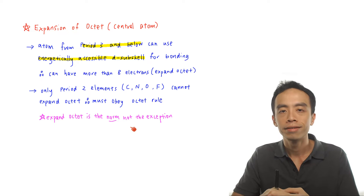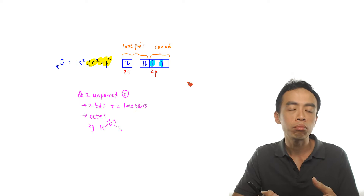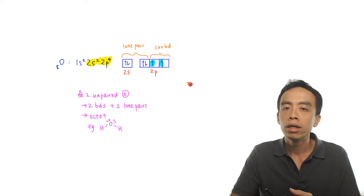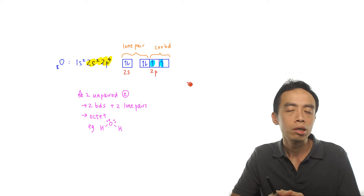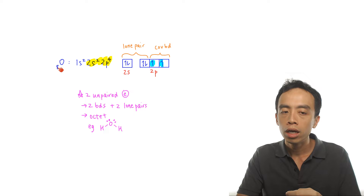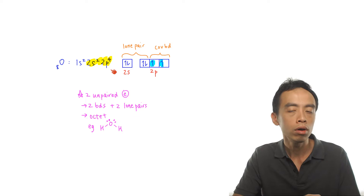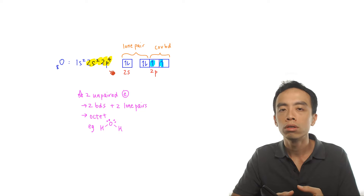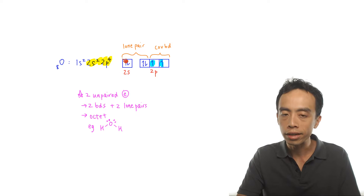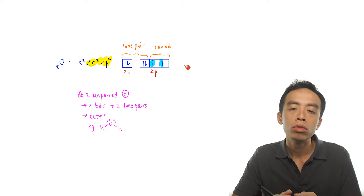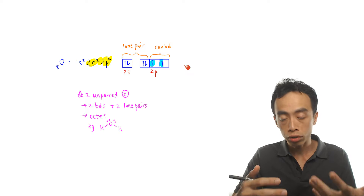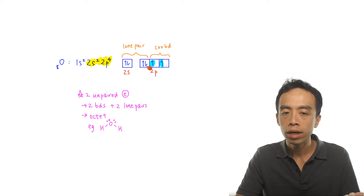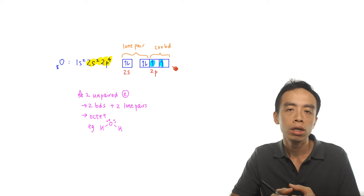To understand why elements want to expand octet if possible, let's use oxygen as an example first. Of course oxygen is in period 2, so we know it cannot expand octet. The electronic configuration for oxygen is 1s², 2s², 2p⁴. If we focus on the valence electrons — 2s², 2p⁴ — and look at the arrangement using the electron-in-box diagram: 2s² will be like this, and 2p⁴ will be like this. What we notice is two paired electrons in 2s and one 2p orbital, and two unpaired electrons in the other 2p orbitals.